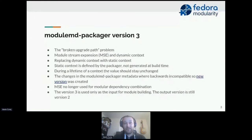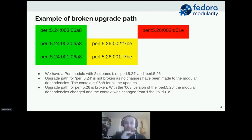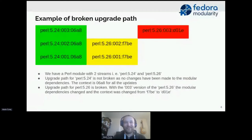In the last year we created a new version of the modulemd packager format. This was due to a design issue in modularity: the broken upgrade path problem. Here's a simple example — the upgrade path problem has many variations and can be more complicated, but just to illustrate the point, here is the most simple example. We have three columns; the whole table represents a module, each column represents a stream.